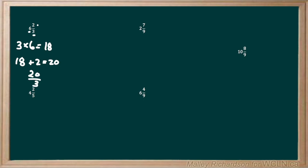We know that this is an improper fraction because the numerator is larger than the denominator. So 20 over 3 makes sense as our answer. Now let's move on to the next question.